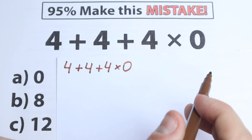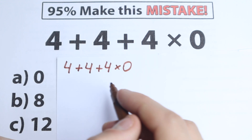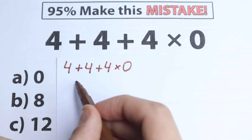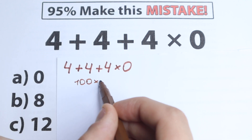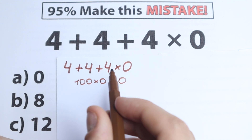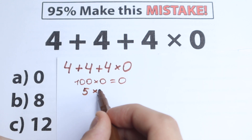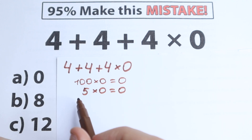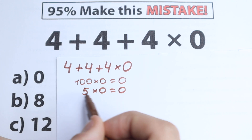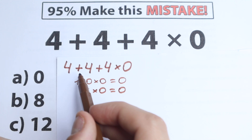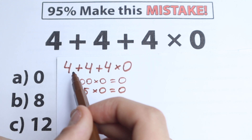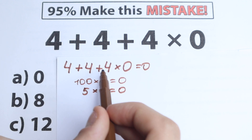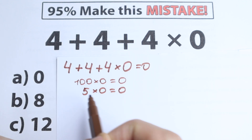One part of students solve it like this: from school they know that no matter what number you have on the left hand side, if you multiply that number by 0 — for example 100 times 0 equals 0, or 5 times 0 equals 0 — so no matter what number you have, the answer is 0. So one part of students think we can solve it the same way here: we have addition, and if we add it then multiply by 0, the answer is 0.